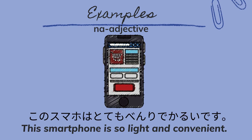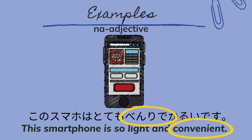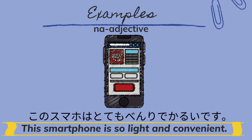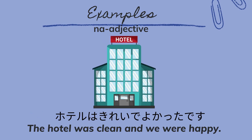The next one is 'Kono sumaho wa totemo benri de, karui desu.' Benri means convenient and karui means light. So in English: This smartphone is so convenient and light.